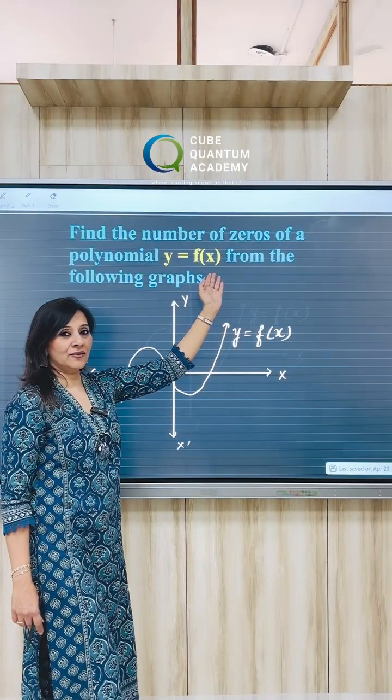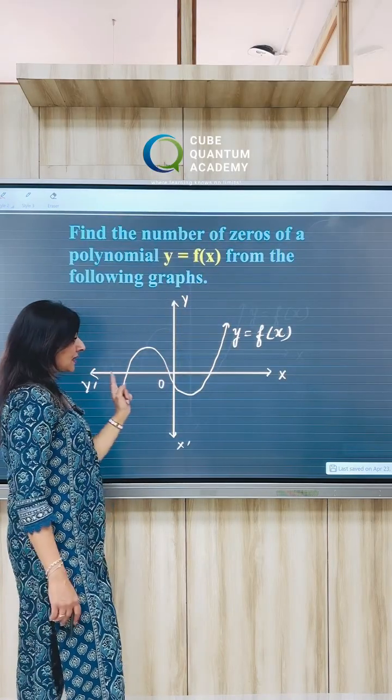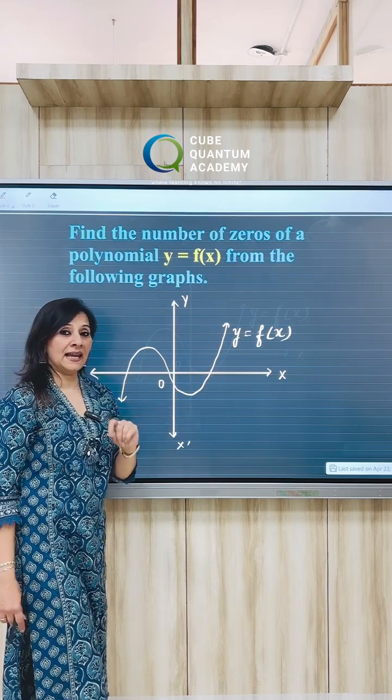Let's take another example. Now this polynomial is also y equals f of x. So we'll count the number of points where the graph intersects the x-axis.